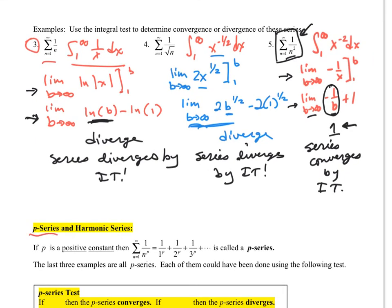Now let's look at p-series and the harmonic series. The harmonic series is a special case of the p-series. In fact, examples 3, 4, and 5 are all p-series. If p is a positive constant, then the sum of 1 over n to the p, that means n in the denominator with an exponent, equals 1 over 1 to the p plus 1 over 2 to the p plus 1 over 3 to the p. This is called a p-series.